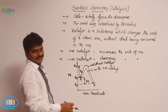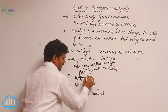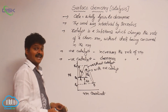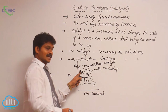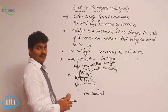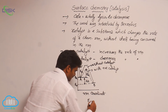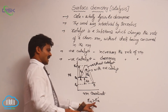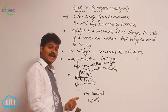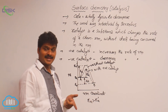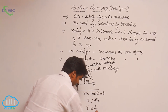With a positive catalyst, the activation energy is Ea dash — the activation energy in the presence of a positive catalyst. Ea is greater than Ea dash. The rate of reaction is inversely proportional to activation energy, so as activation energy decreases with a positive catalyst, the rate of reaction increases.